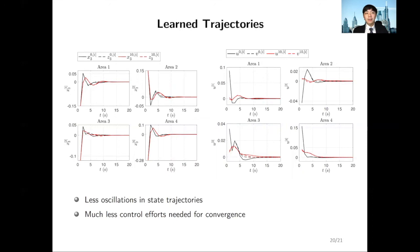Finally, I'm showing the learned state and input trajectories in red lines. Compared to the baseline trajectories shown in black, the learned state trajectories appear to have less oscillations, and we're able to use much less control effort for states to converge. This can translate into huge operational and economic benefits in real-life control problems.